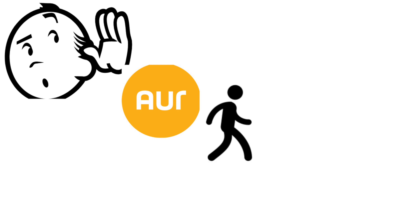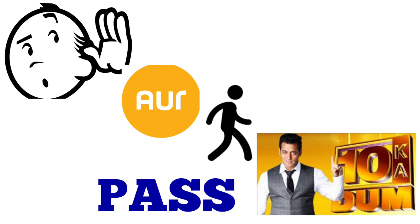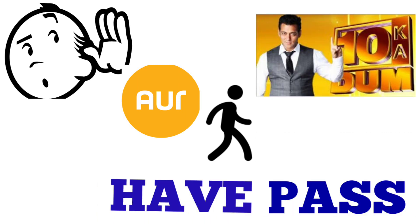Suno means to listen and stands for blood clotting factor seven. Aur is blood clotting factor eight. Chalo is factor nine. Salman — from 'Das Ka Dum' — is factor ten. Paas is factor eleven.